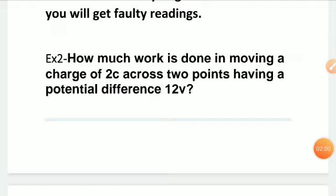Next question: how much work is done in moving a charge of 2 coulombs across two points having a potential difference of 12 volts? The potential difference is 12V. Moving a charge of 2 coulombs across two points means the potential at the first point is 0 and at the second point it is 12V.